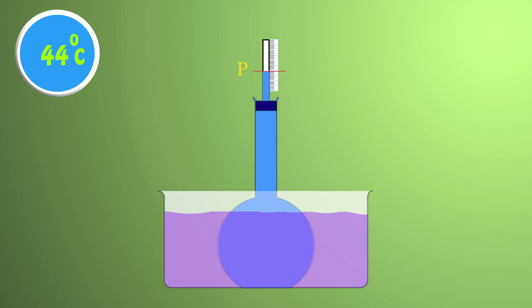Observe carefully the level of water in the capillary tube. You will notice the level of water falls to Q. After some time, the water level starts rising. It not only reaches P, but also moves further up to R.